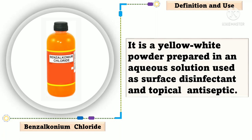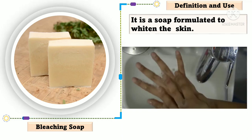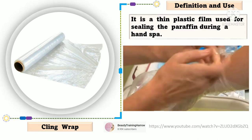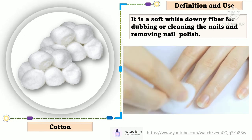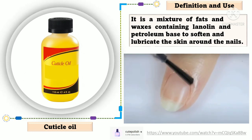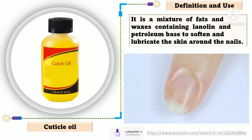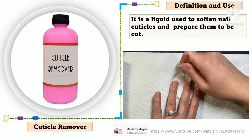Benzalkonium chloride is a yellow-white powder prepared in an aqueous solution used as a surface disinfectant and topical antiseptic. Bleaching soap is a soap formulated to whiten the skin. Cling wrap is a thin plastic film used for sealing the paraffin during a hand spa. Cotton is a soft white downy fiber used for dabbing or cleaning the nails and removing nail polish. Cuticle oil is a mixture of fats and waxes containing lanolin and petroleum base to soften and lubricate the skin around the nails. Cuticle remover is a liquid used to soften nail cuticles and prepare them to be cut.